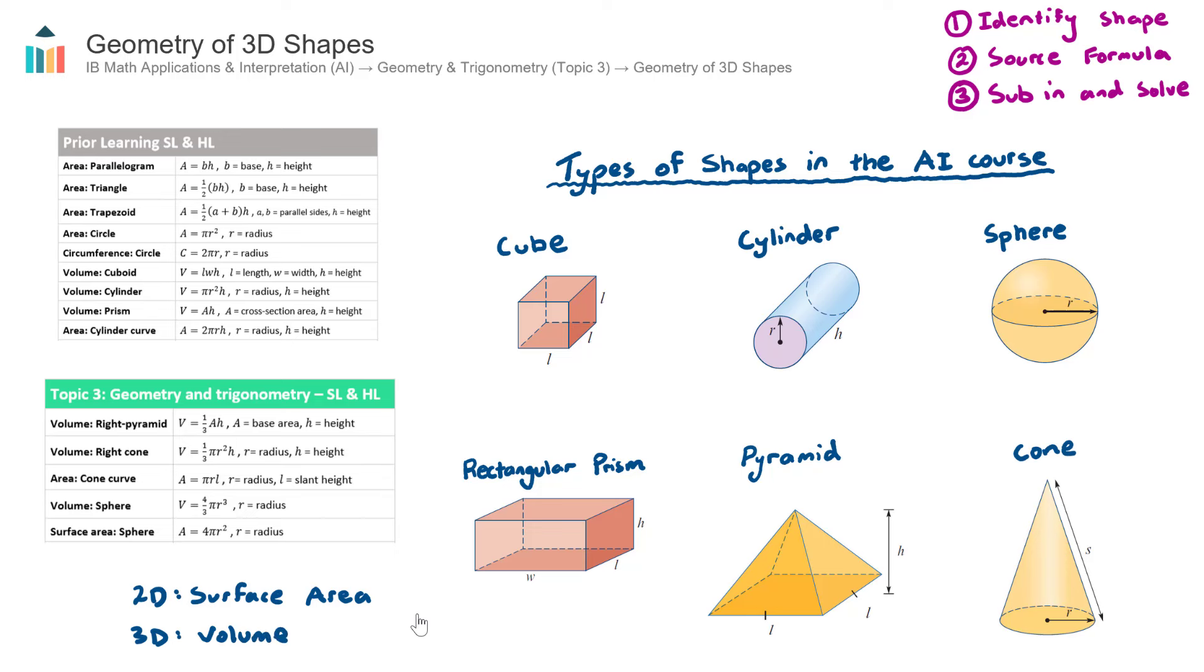And just be careful with the units. Let's say that the measurements for both of these were in meters, then your units for surface area will be meters squared, and your units for volume will be meters cubed. And it's important there that you get your units correct when providing your final answer.